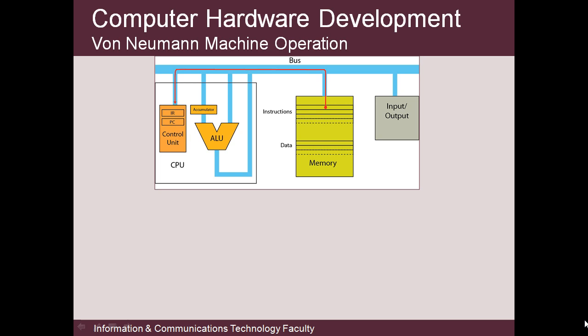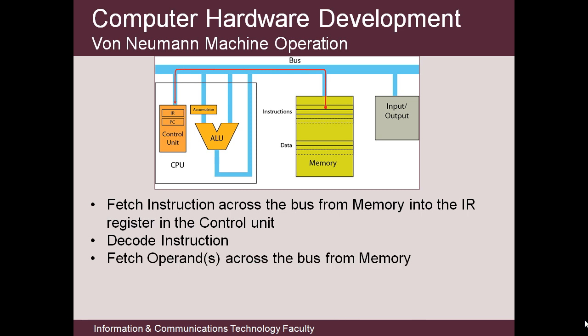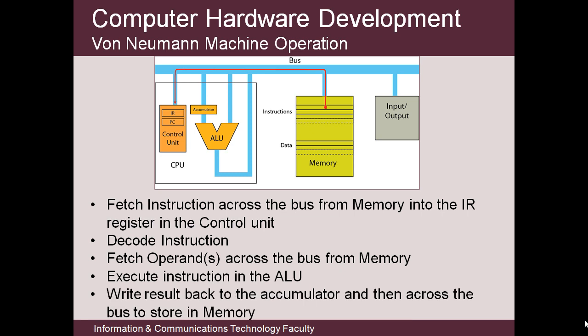Let's look back at the operation of the basic von Neumann machine to see where some of the performance issues arise. It operates on a series of simple machine code instructions, each of which has to be fetched in from memory across the bus, decoded, and then any operands have to be fetched across the bus too and passed to the ALU where the instruction is executed. Results then have to be stored back into memory across the bus.